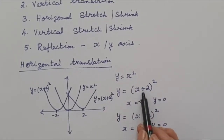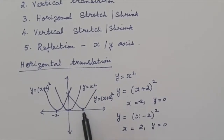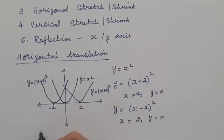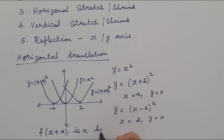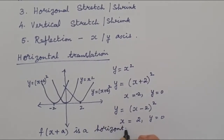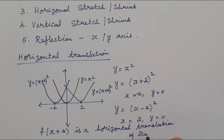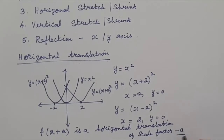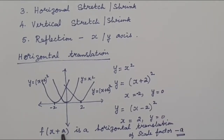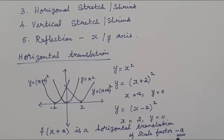When the value inside the bracket is positive 2, the graph moves towards the left side. When it is negative 2, it moves towards the right side. From these two transformations we understand that f(x+a) is a horizontal translation of scale factor -a. When a takes a negative value it becomes positive, so we write a negative value.